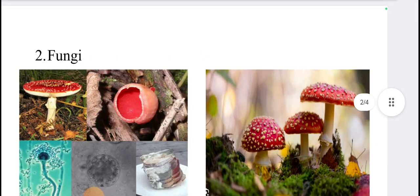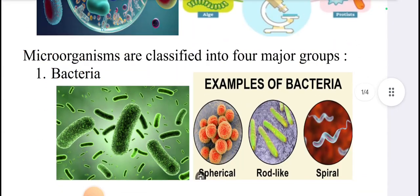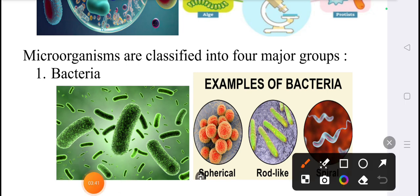Bacteria are useful — they are used to make milk products such as curd, cheese, and paneer. Nitrogen-fixing bacteria, Rhizobium, fix atmospheric nitrogen into the soil and make the soil fertile. They decompose sewage waste and other organic waste and convert them into simple substances. Bacteria are also used to prepare vaccines and antibiotics.